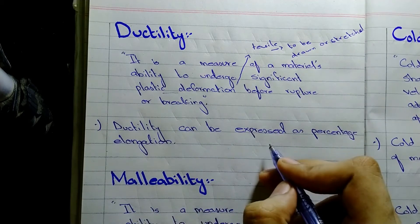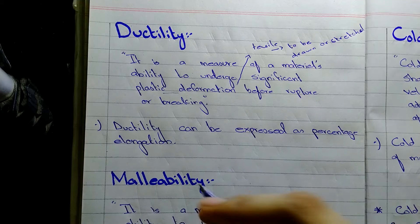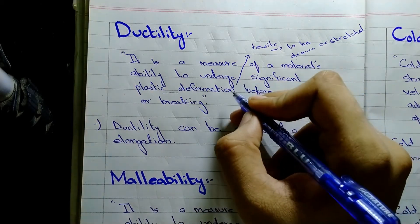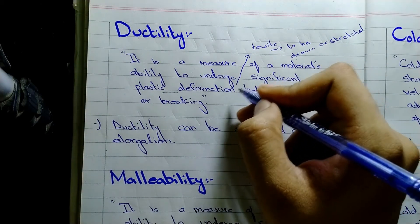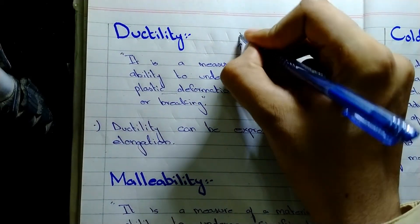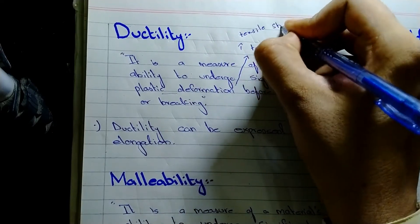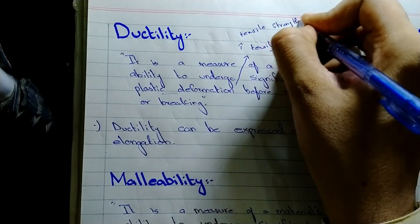Before rupture or breaking, ductility can be expressed as percentage elongation. As the material is undergoing plastic deformation in a tensile way, it should have sufficient tensile strength for ductility.